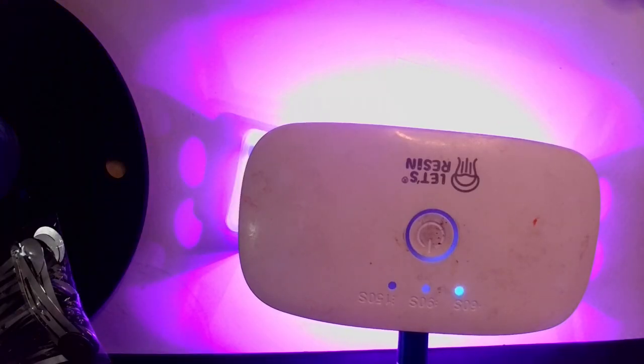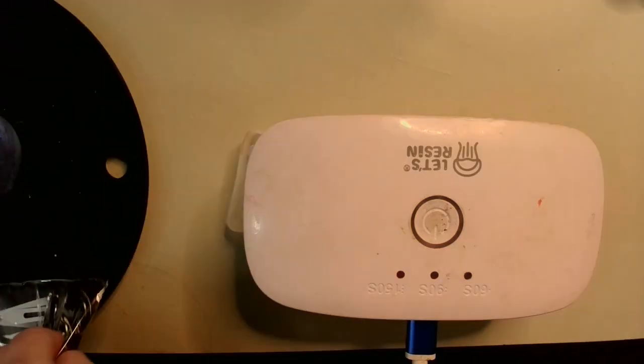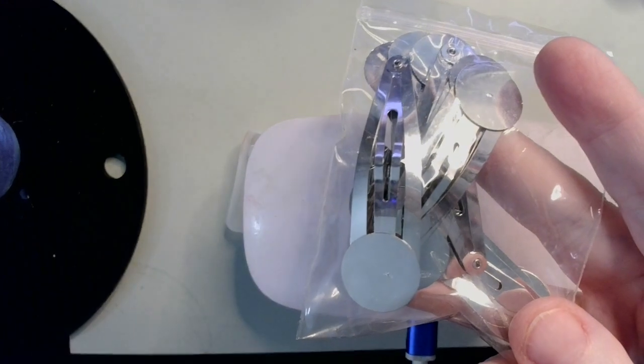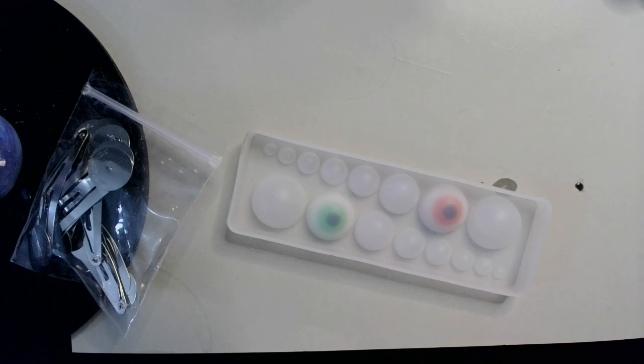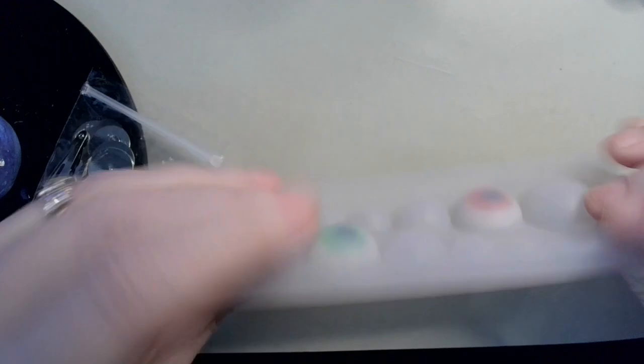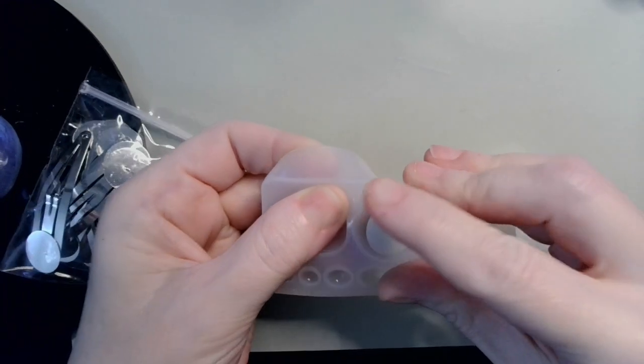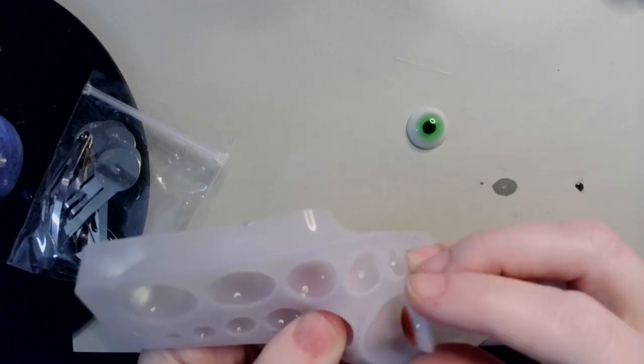Almost done! So you're probably wondering, Gref, what are you going to do with these cool little eyeballs? Well, let me tell you. We're going to make hair clips. That's right! 90 seconds on one side, 60 seconds on the other. Let's pop them out and see what they look like. Boom! The answer is yes.